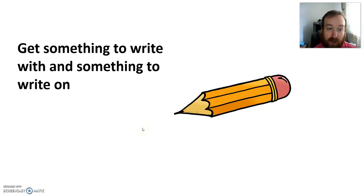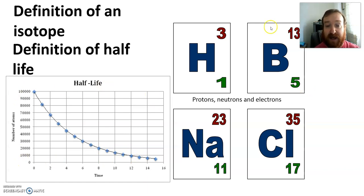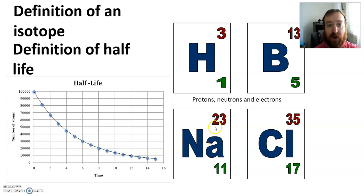Okay so we're continuing with radiation this week and our first task is looking back at some of the stuff we've already looked at. You need to write the definition of an isotope and the definition of what half-life is. You need to find out what the half-life of this sample is and you need to find out the number of protons, neutrons and electrons of these four atoms. The symbols are the same as some of the ones you've done before but the number of neutrons is going to be different.